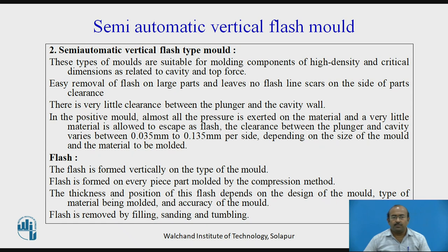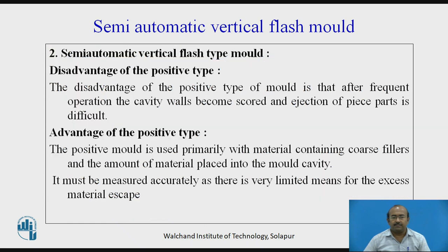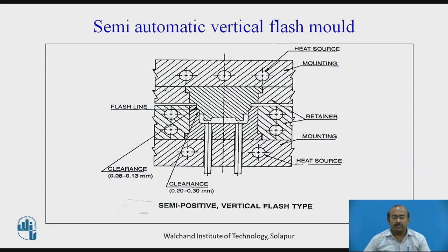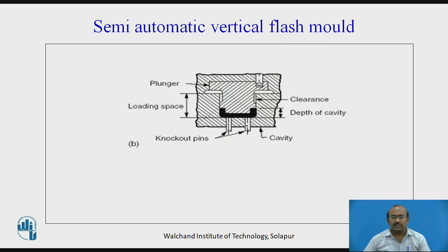Semi-automatic vertical flash mold: these molds are suitable for molding components of high density and critical dimensions related to the cavity and top force. There is very little clearance between the plunger and the cavity wall. The flash is formed vertically, and it is removed by filing, sanding, and tumbling. Disadvantage: after frequent operation, the cavity walls become scored and ejection of the part is difficult. Advantage: charge must be measured accurately as there is very limited means for excess material to escape. This mold is shown in two diagrams with flash flowing in vertical form.